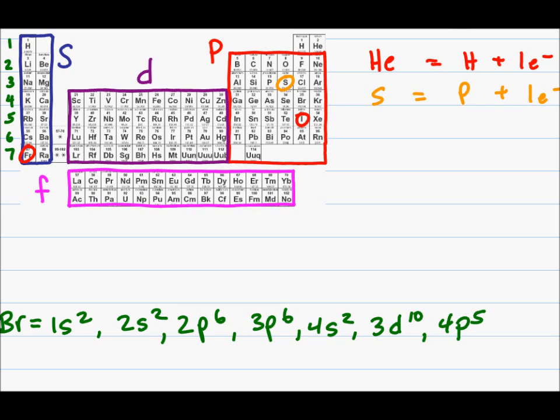The reason this is useful is now I can go back to my iodine example and see that iodine comes after the noble gas, krypton. So I can write krypton in brackets. After krypton, I simply have 5s2, I have 4d10, and then I have 5p5.